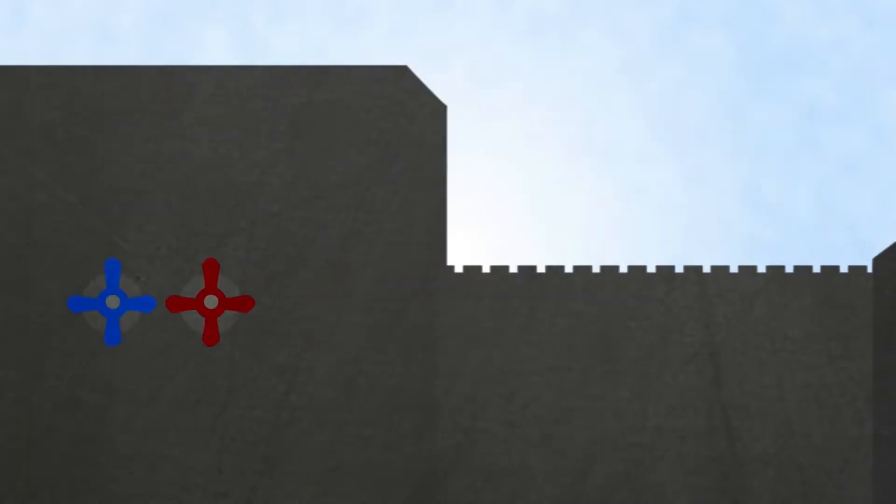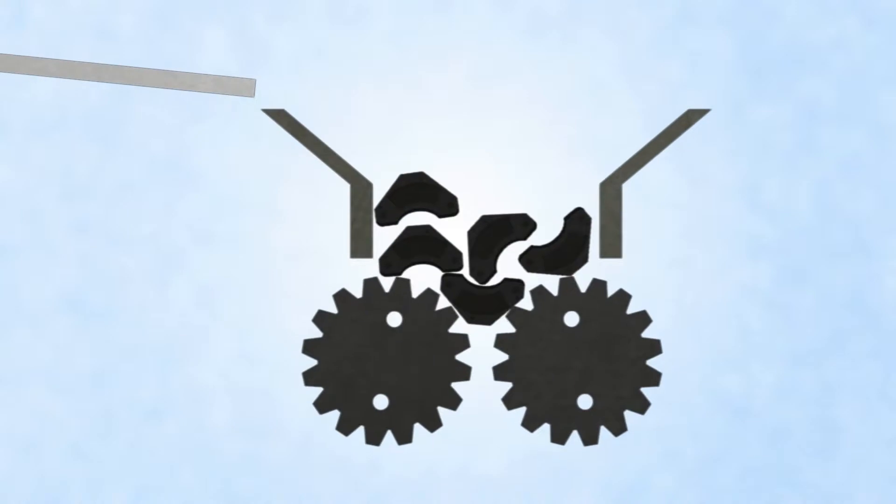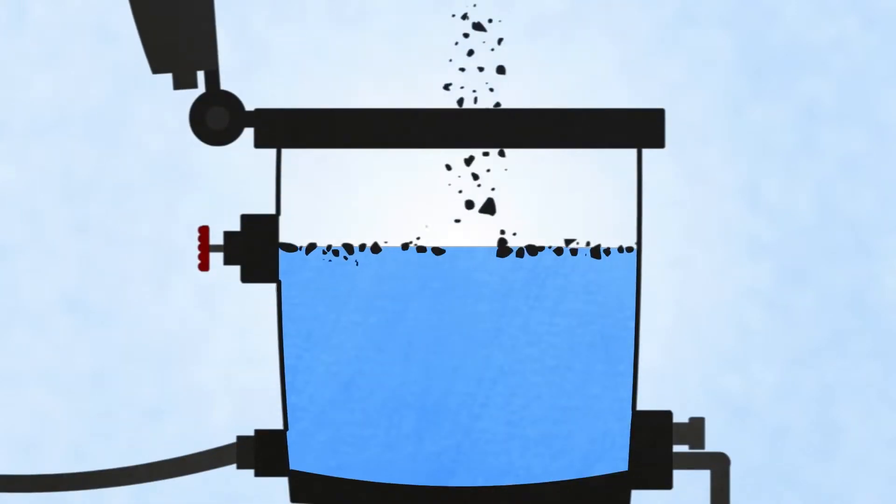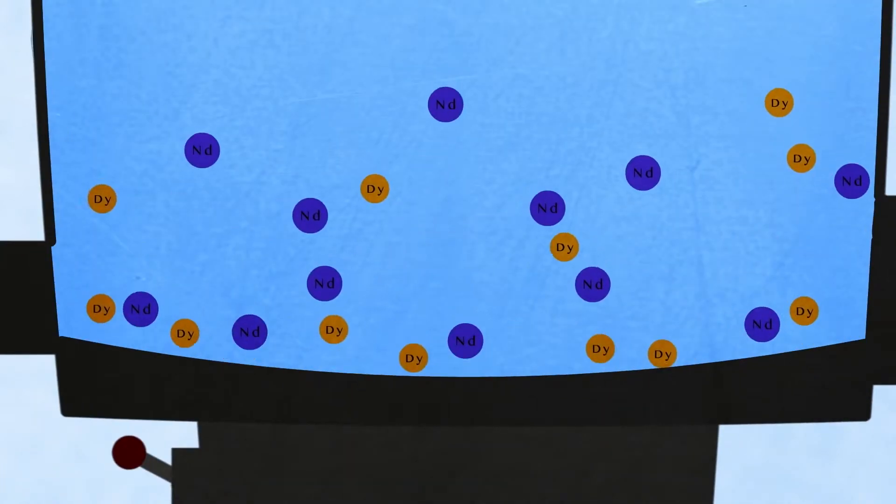And then the second part of the process is a chemical process and that is where the magnets are ground up into a powder and they go into a chemical reactor and through that chemical process the rare earth elements are refined from it. The funding has helped us develop our technologies which is really critical to our business.